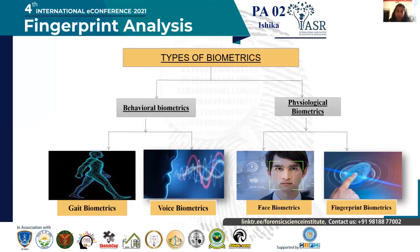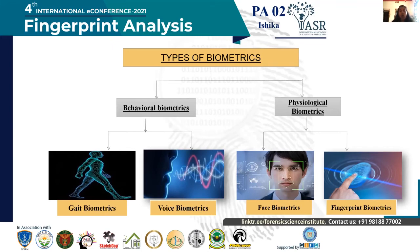Behavioral biometrics includes voice, gesture, signature style, typing speed, rhythm, etc. Gait biometrics is the style or manner of walking. This has led to a number of automated vision-based algorithms that use gait as a biometric. Such a system usually consists of a video camera capturing images of a person walking within its field of view, with appropriate features extracted from the video and compared with stored gait signatures of known individuals.